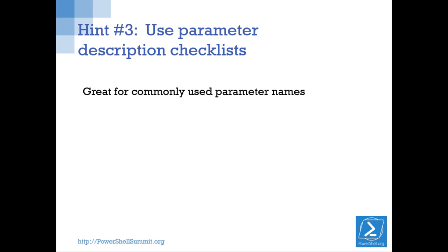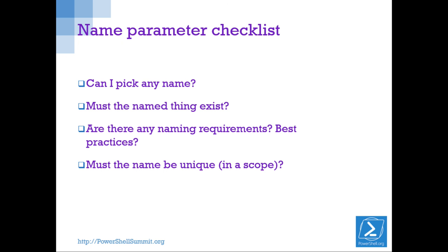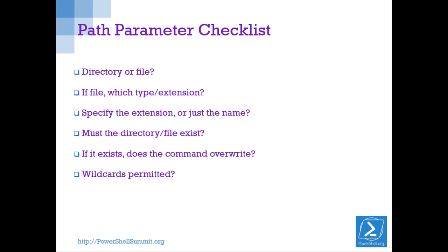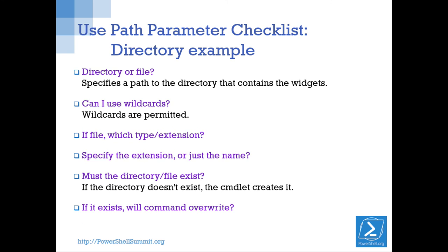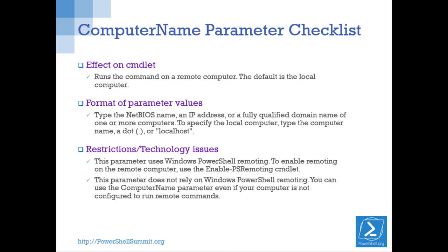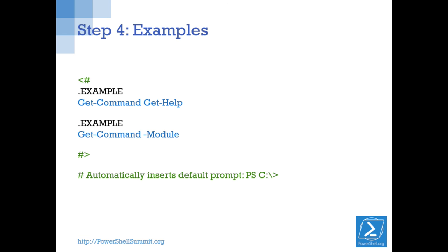I have some parameter description checklists for commonly used parameter names — all out on GitHub. Here's the one for 'Name': instead of 'the name is the name,' ask: can I pick any name? Does it have to exist already or do I have to create it? Are there any naming requirements? For Azure: does the name need to be unique in a certain scope? I also have checklists for Path and ComputerName.